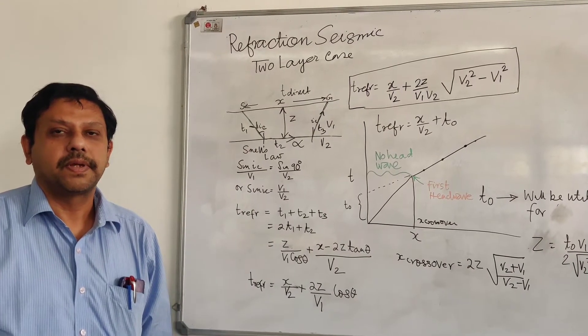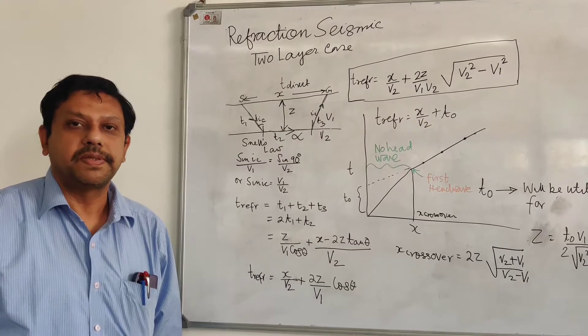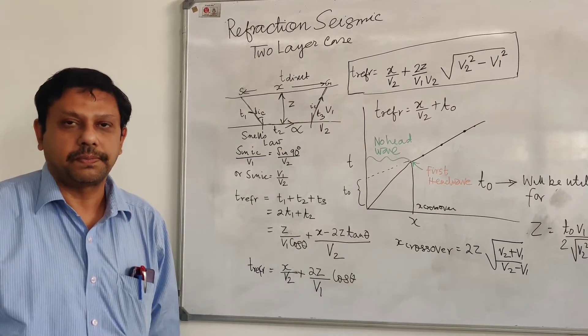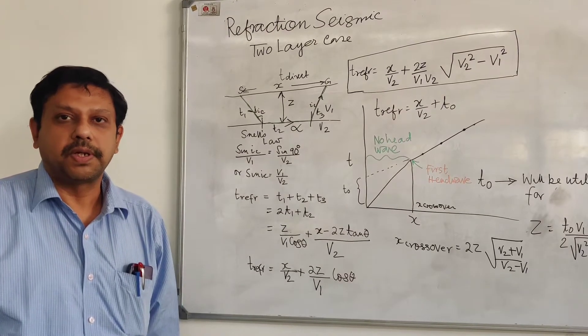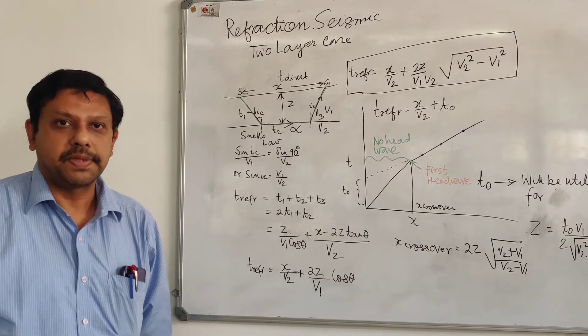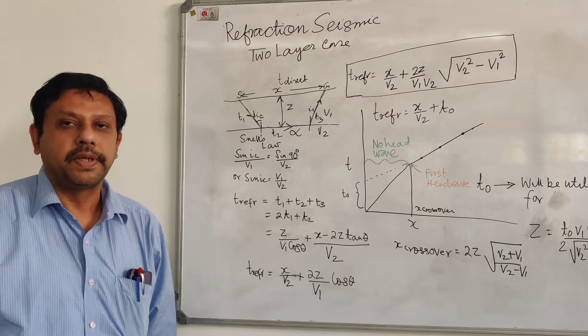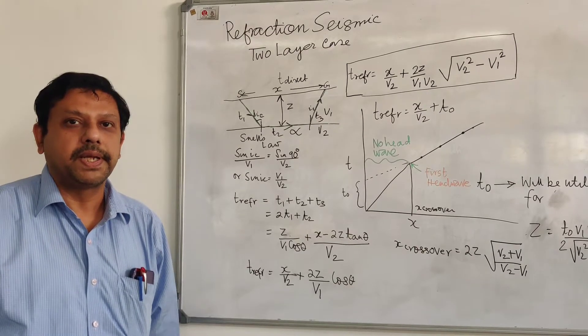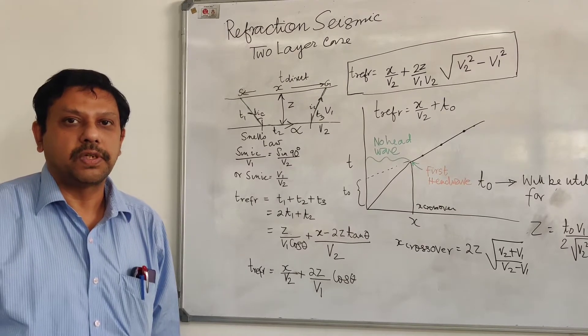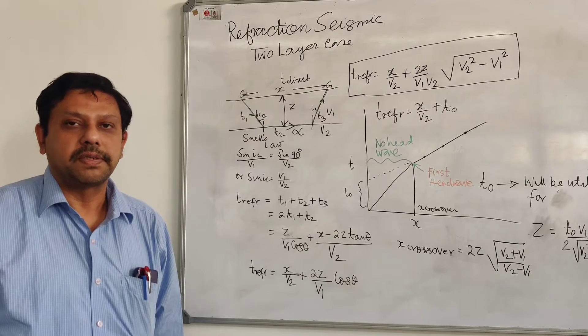In my class, I have told you that refraction survey should precede a reflection survey in order to understand the low velocity zone. The low velocity zone is important because here the waves which travel are Rayleigh waves and Love waves, and those are noise for us. It is known as ground roll, and that needs to be mathematically removed in order to go below this low velocity zone while planning the shot points for the refraction survey.